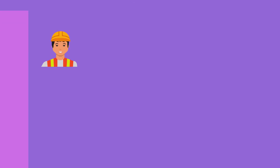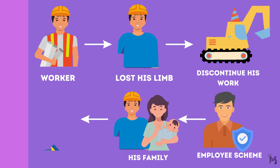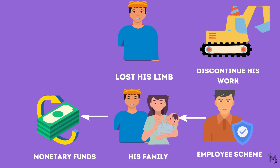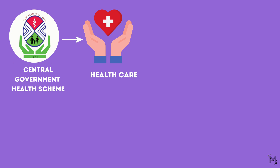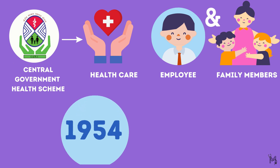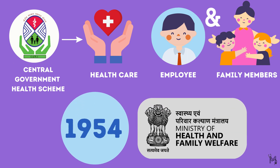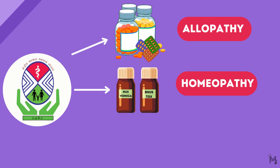Suppose a construction worker lost his limb due to an accident on site and is no more able to continue in the same line of work due to his disability — this scheme will help him and his family with monetary funds. The Central Government Health Scheme has an objective of providing healthcare comprehensively to central government employees and their family members. It was set up in 1954 under the Indian Ministry of Health and Family Welfare, and mainly provides services through allopathic, homeopathic, as well as the Indian system of medicine.